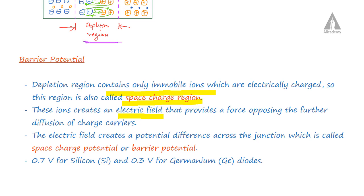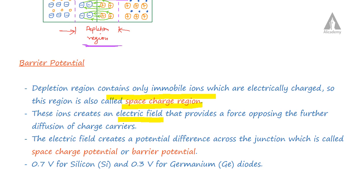This electric field creates a potential difference across the junction, which is called the space charge potential or barrier potential. For a silicon diode, the barrier potential is 0.7V. For a germanium diode, the barrier potential is 0.3V.